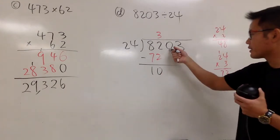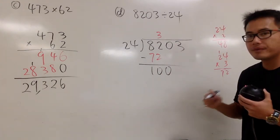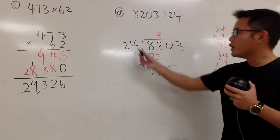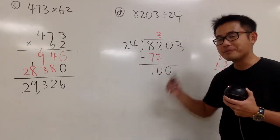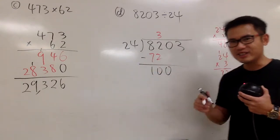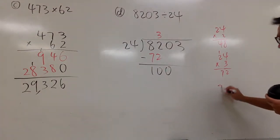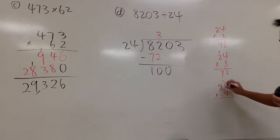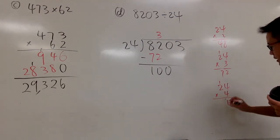And then you bring down the next number, which is 0. And you are going to ask yourself, 24 goes into 100 now, how many times? And the answer to that is 4. I'll show you. 24 times 4: 4 times 4 is 16. And then, 4 times 2 is 8, plus 1 is 9.